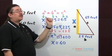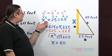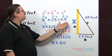Replacing the variables with the information given in the problem, I get the following: x squared plus 25 squared equals 65 squared.